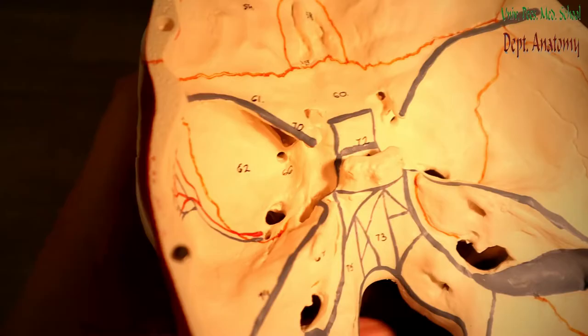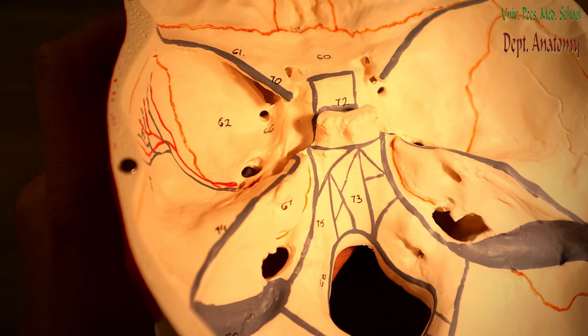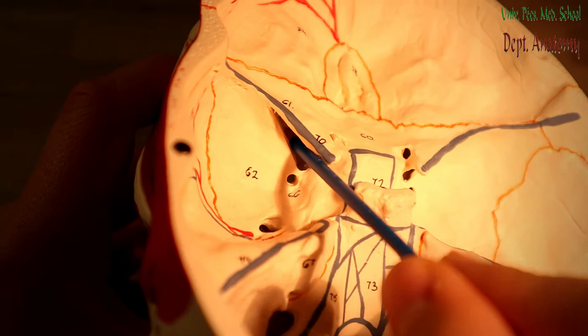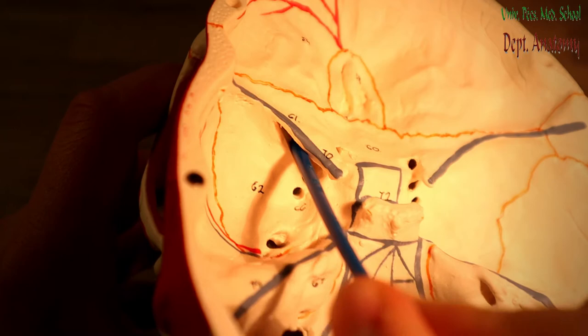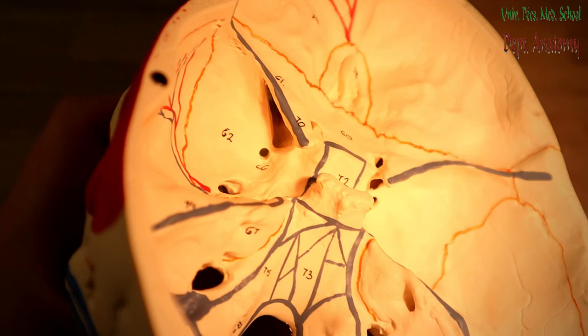Let's go into the middle cranial fossa, where you find more structures. We start with the fissure between the greater and lesser wings of the sphenoid bone — this is called the superior orbital fissure, or Fissura Orbitalis Superior. This fissure connects the middle cranial fossa with the orbit. From the orbital side you can also see the superior orbital fissure.